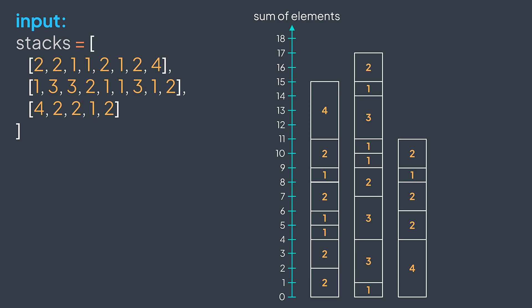And if a stack has an element that ends at a particular height, it means that it can reach that sum of elements. For example, stack one has an element that ends at eight, it means that it can reach the sum eight, which is true: two plus two plus one plus one plus two gives eight.